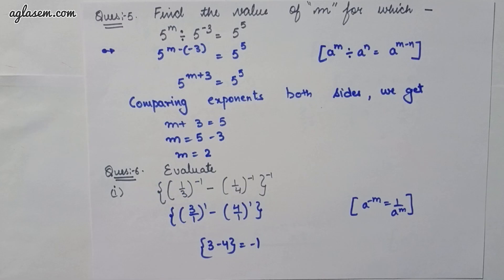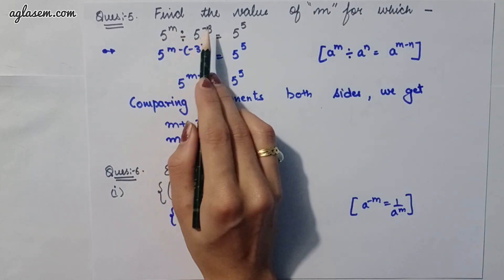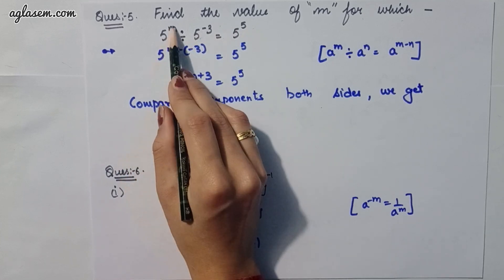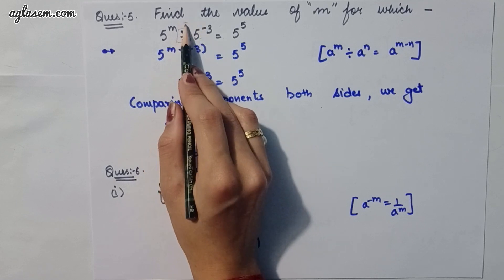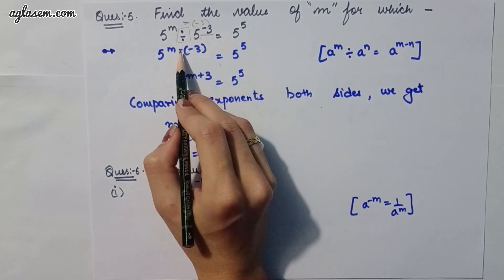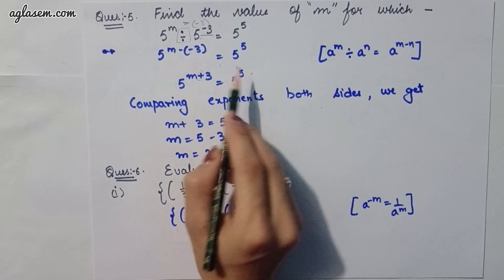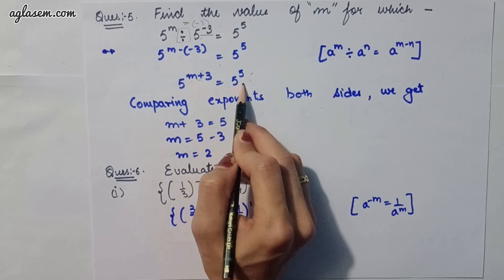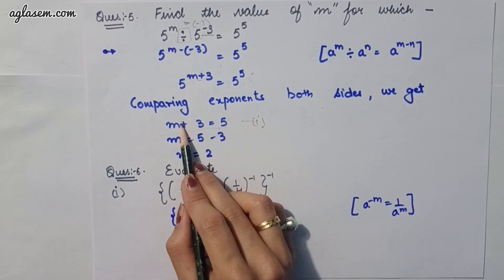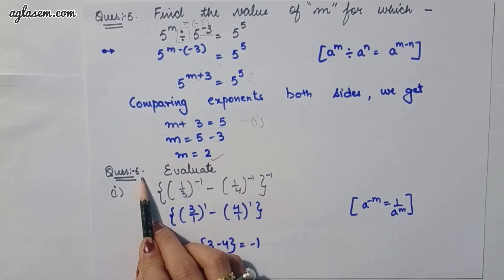Moving to the fifth question: find the value of m. Part 1 is 5^m divided by 5^(-3) = 5^5. Taking 5 as the common base and applying a^m / a^n = a^(m-n), we get 5^(m-(-3)) = 5^5, so m + 3 = 5. Comparing exponents on both sides, m = 5 - 3 = 2.